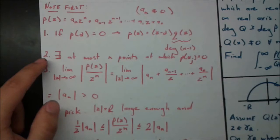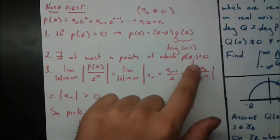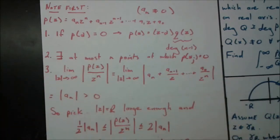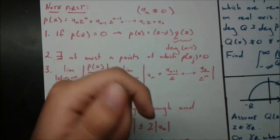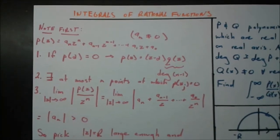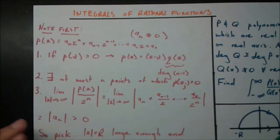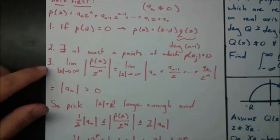Fact two: there exist at most n points at which P(α_j) = 0 — meaning P has at most n zeros. That's another result from algebra: a quadratic like x² + 1 has at most two zeros because the degree is 2. The same applies to all other polynomials.